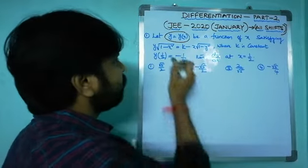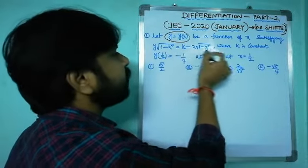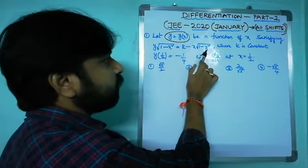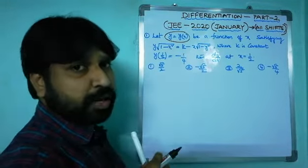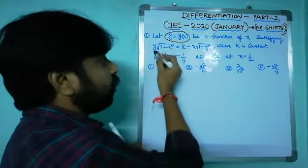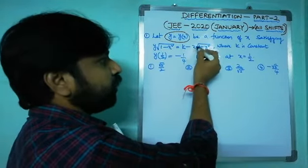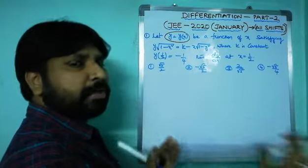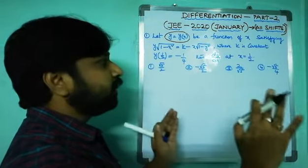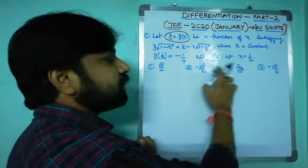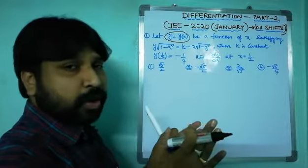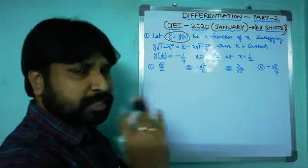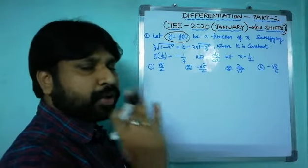The procedure is straightforward: differentiate both sides with respect to x. Wherever y appears, you get dy/dx terms. Apply the product rule (uv rule) on both sides, collect all dy/dx terms on one side, and solve for dy/dx. Then substitute x = 1/2.